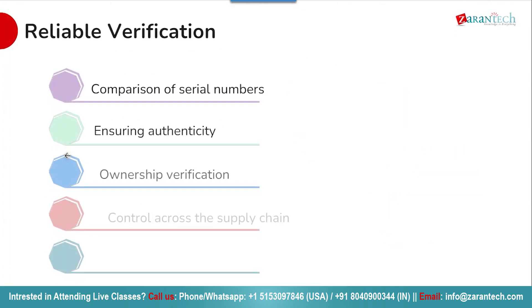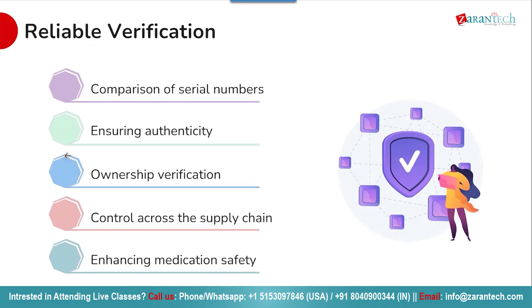Moving on to reliable verification. SAP ATTP empowers pharmaceutical companies to better combat counterfeit products and fraud. It enables verification of product authenticity and provenance by tracking the chain of custody and comparing serial numbers at each point. This provides an audit trail to document that products are genuine and come from the original manufacturer. SAP ATTP also makes it easier to verify authorized ownership of products as they move through the supply chain, enhancing medication safety and protecting patient health.